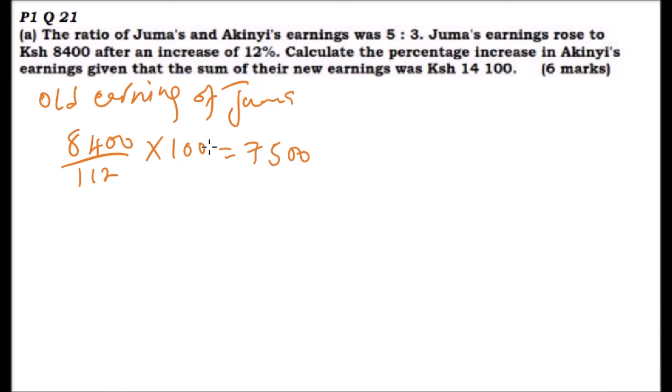Since we've been given the ratio of Juma and Akinyi's earnings, if the old salary of Juma is 7500, let the salary of Akinyi be x.